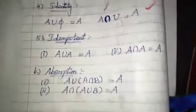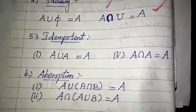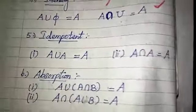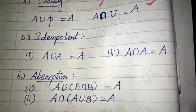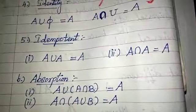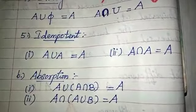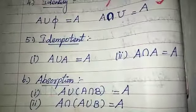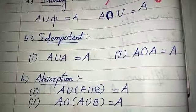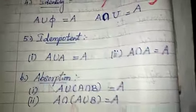Absorption property: A union (A intersection B) equals A, and A intersection (A union B) equals A. This describes the absorption relationship between union and intersection.